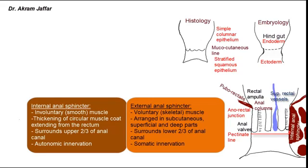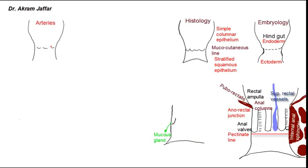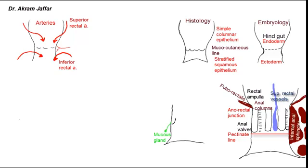Although the anal canal is only four centimeters in length, its dual embryonic origin from ectoderm and endoderm is reflected in many of its features. The blood supply above the pectinate line is derived from the superior rectal artery, a branch of the inferior mesenteric artery. Below the pectinate line, the blood supply comes from the inferior rectal artery, a branch of the internal pudendal artery, which is a branch of the internal iliac artery. The middle rectal artery sometimes participates and assists in forming anastomoses between the superior and inferior rectal arteries.